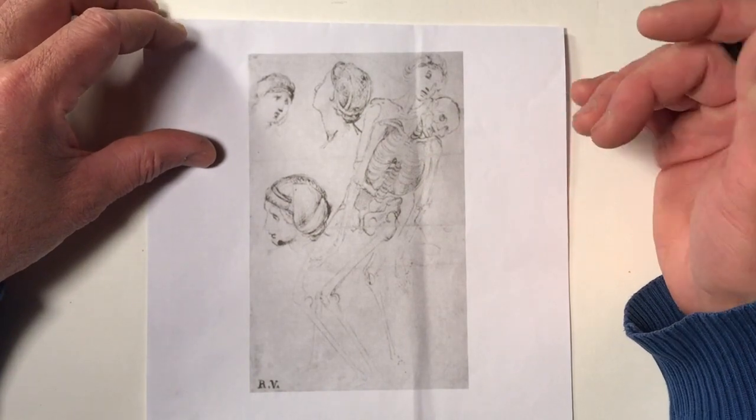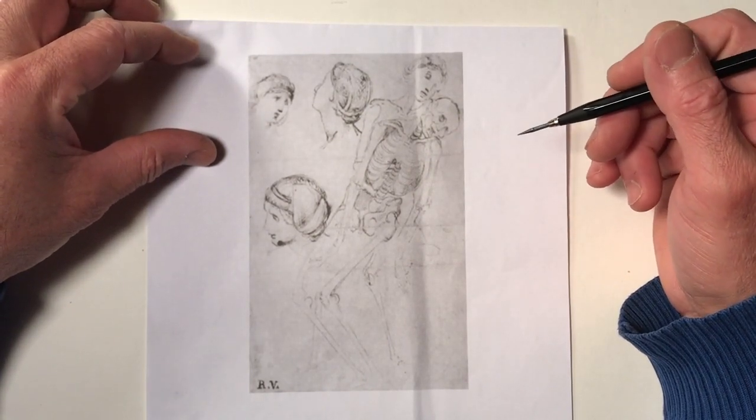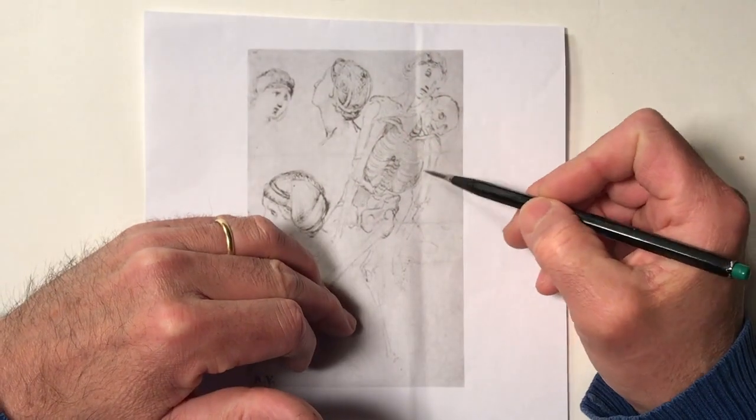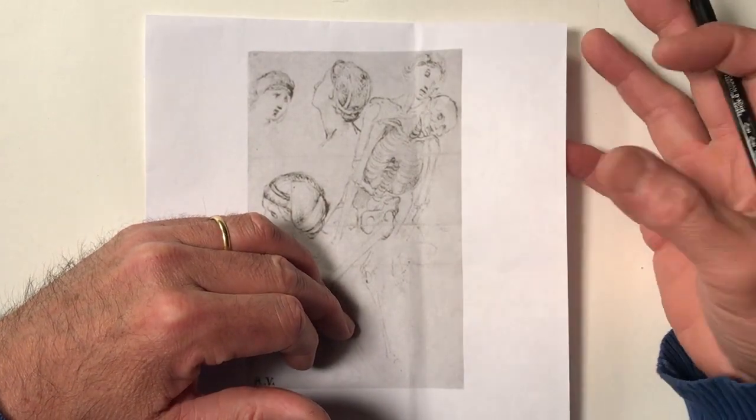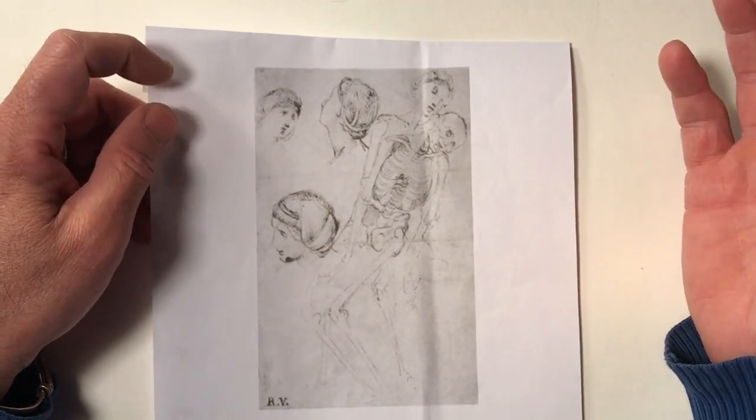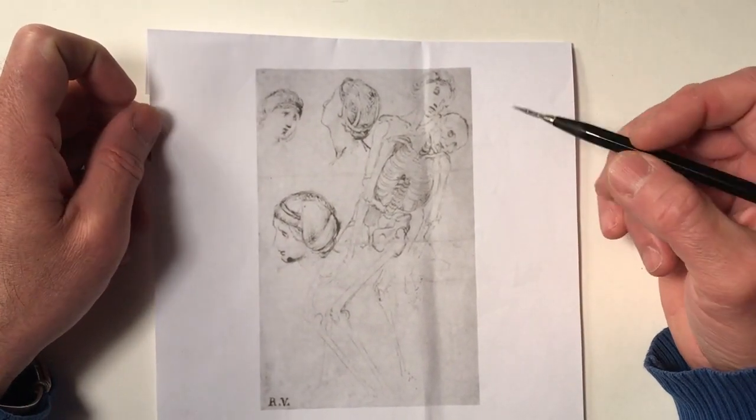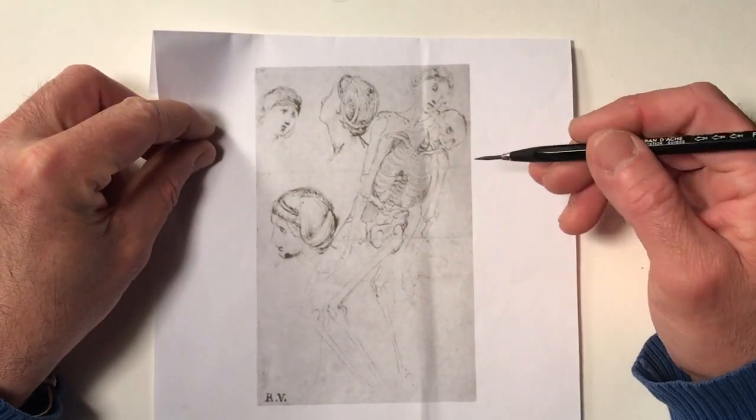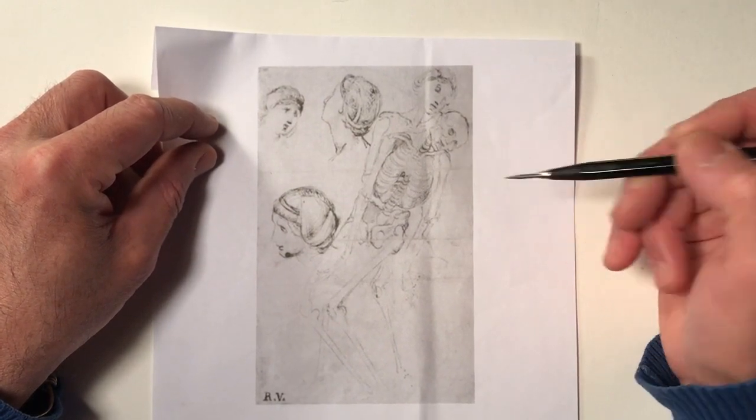So this video will be about how to move from the skeletal structure onto the muscles and then eventually the clothes. This is a technique, a method that started during the Renaissance. And I found this drawing, this sketch by Raphael, or Raffaello, as we say in Italy, and it shows exactly that method.